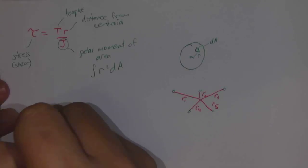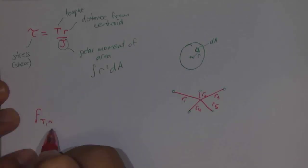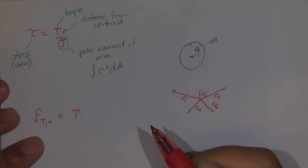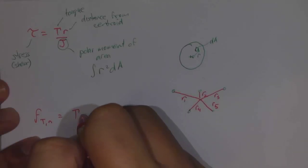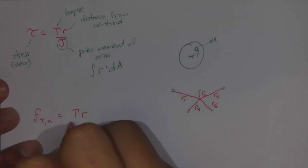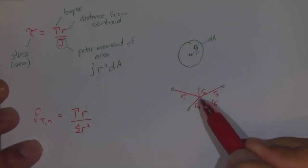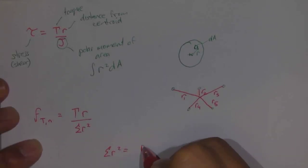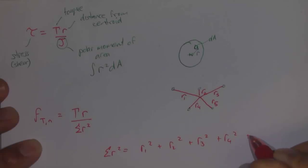We have a similar equation that we can use. It looks like this. FT for whichever item we're looking, so this could be like number one or number two, is equal to the torque which is being applied onto our object, multiplied by the distance away for that particular bolt, divided by the sum of R squared for each one of these items. So that would be equal to sum of R squared would be equal to R1 squared plus R2 squared plus R3 squared R4 squared and R5 squared.